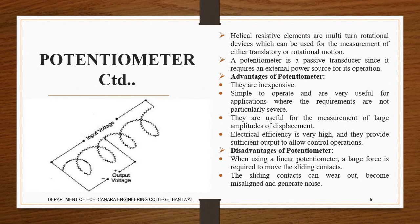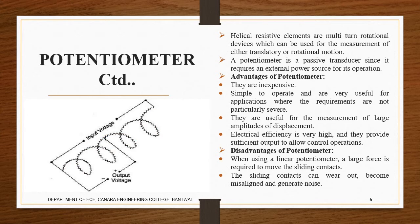Another type is called the helix potentiometer. Here the resistance element is in a helical circular shape. A pointer or wiper moves along the helix as the shaft is twisted. Think of it like a twisted pair of cables — as the shaft twists, the contact point moves progressively along the helix from one turn to the next.